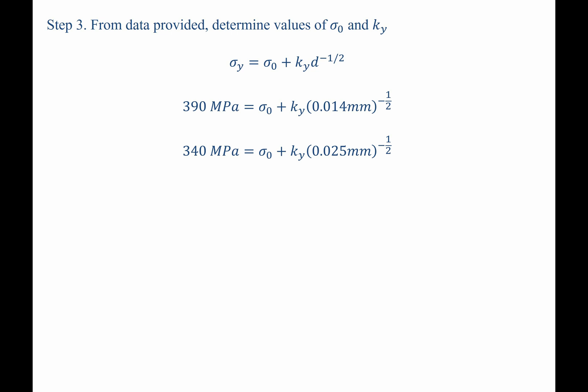There's a number of ways we can solve them. Perhaps the easiest is to take the first equation and subtract from it the second equation. The reason this is convenient is because the sigma-naughts are going to cancel out. We're left with 50 megapascals on the left-hand side of the equation.